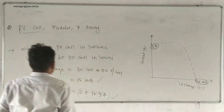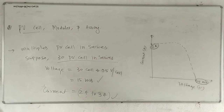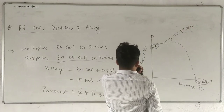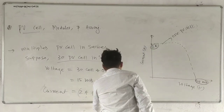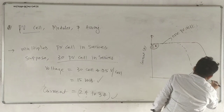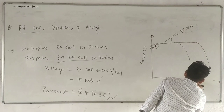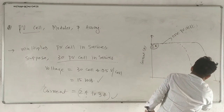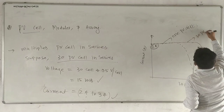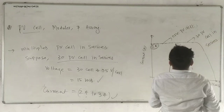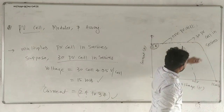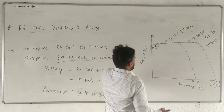If you see the IV plot of 30 PV cells in series — this is the IV plot of 1 PV cell. If you connect 30 PV cells in series, our current will be constant, but our voltage will be increased to nearly 50V. That is the plot of the 30 PV cells in series. One PV cell can generate 0.5V and the current will be 2 EPM. If you connect 30 PV cells in series, voltage will be increased but current will be constant.